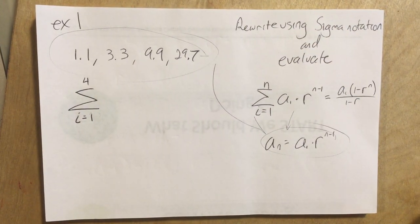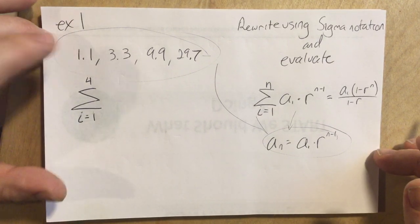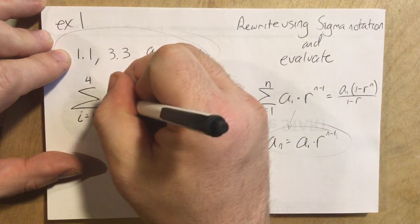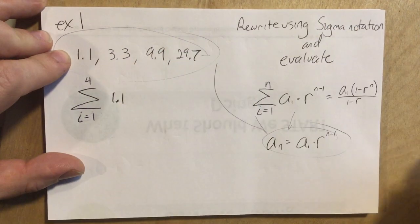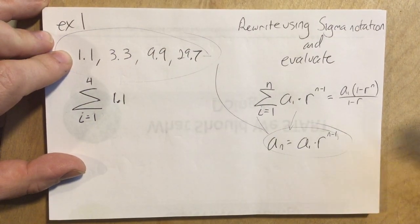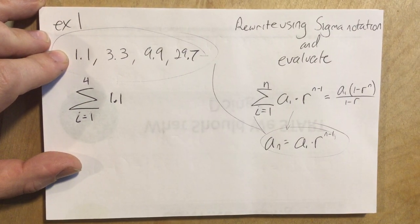So a sub n equals a sub 1. Well, that's the first term right there, 1.1. So if you were asked to write the formula for a sub n, we're doing that as part of writing it in sigma notation.